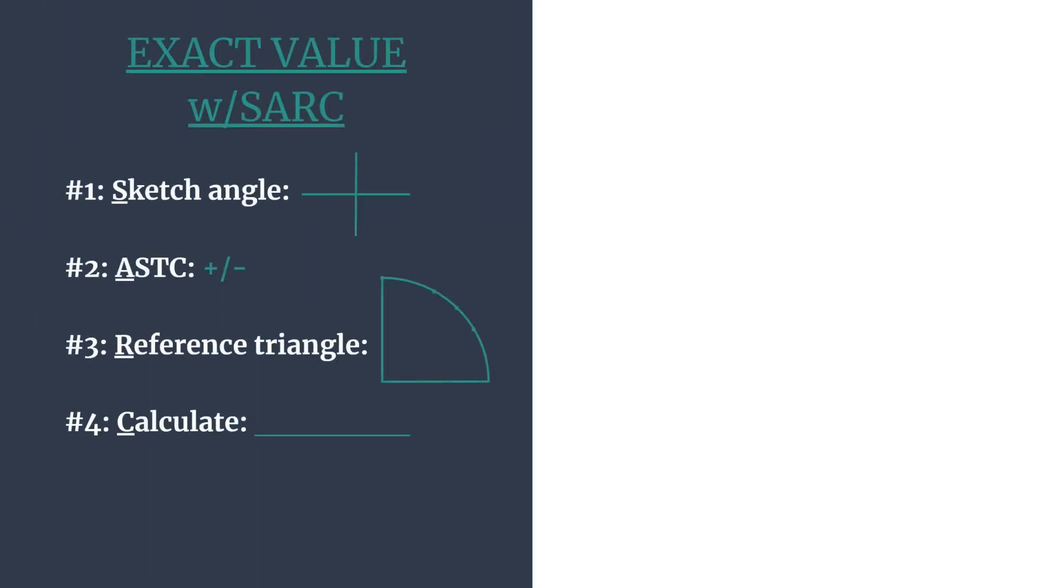Here's an outline of the SARC method and you can use this template to keep your information organized. SARC is an acronym to help us remember the order of the steps. S stands for sketching the angle's terminal side. A stands for ASTC, which is what we use to know which trig functions are positive in each quadrant.